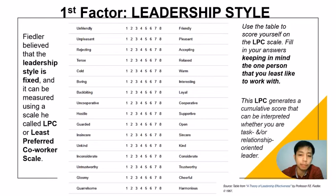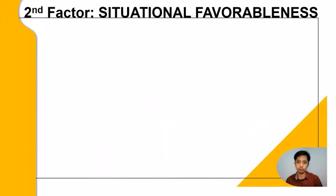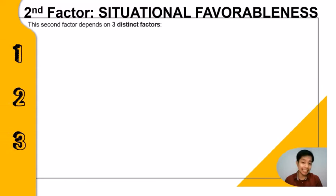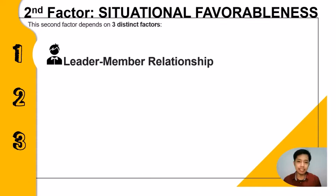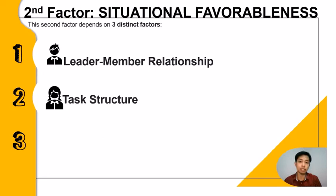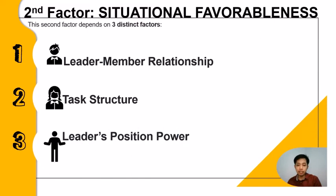The second factor is situational favorableness, which depends on three distinct factors. First, the leader-member relationship — the level of trust and confidence the team has in the leader: are the leader-member relations good or poor? Next, task structure — the type of task a leader is doing: clear and structured, or vague and unstructured? And lastly, the leader's position power — the amount of power a leader has to direct the group, identified as either strong or weak.